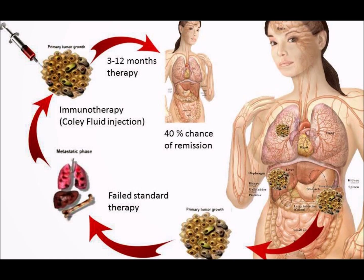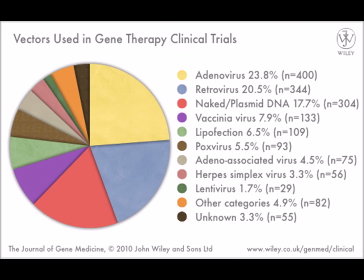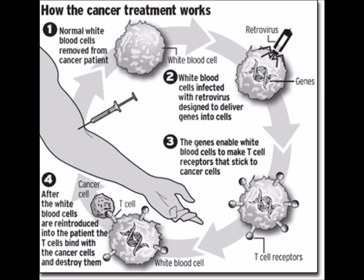Hormone therapy is also done, where different types of artificial chemical hormones are introduced inside the body to fight against cancer cells. The fifth treatment is gene therapy, where adenovirus, retrovirus, plasmid DNA, and vaccinia DNA are given, and white blood cells infected with retrovirus are designed to deliver therapeutic genes.